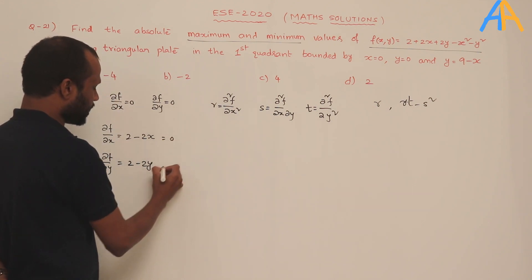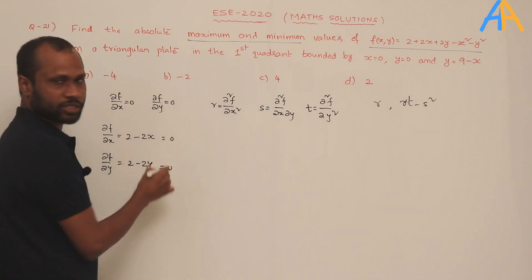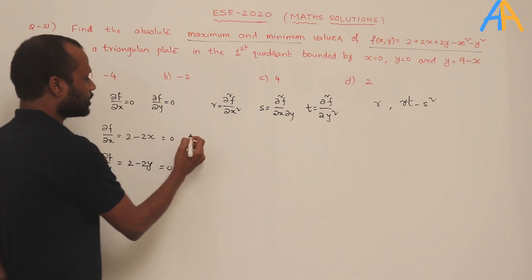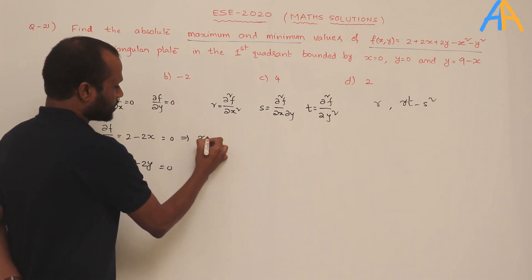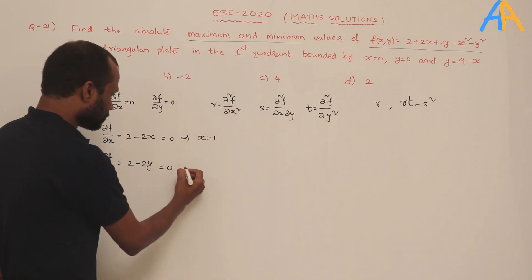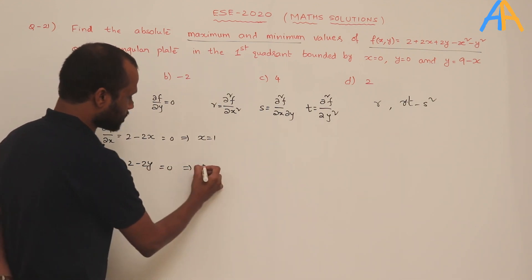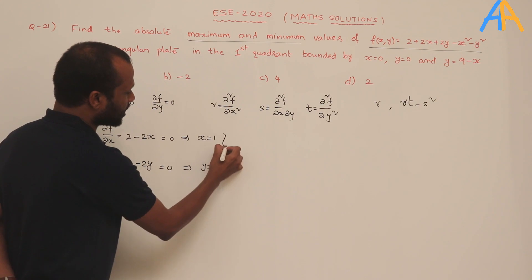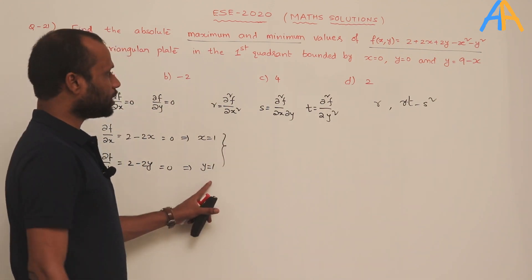Setting both derivatives equal to zero: 2 − 2x = 0 gives x = 1, and 2 − 2y = 0 gives y = 1. So the critical point we arrive at is (1, 1).